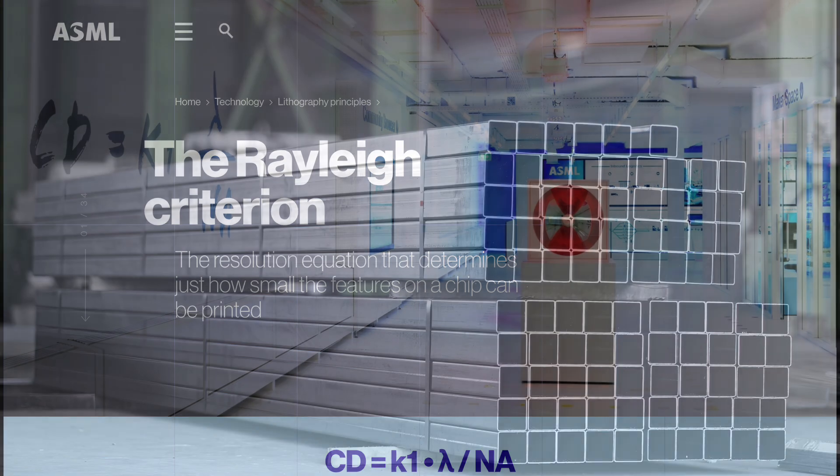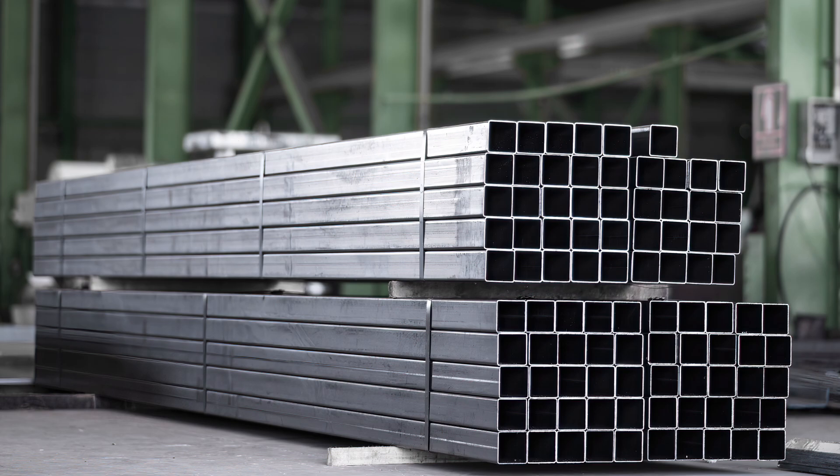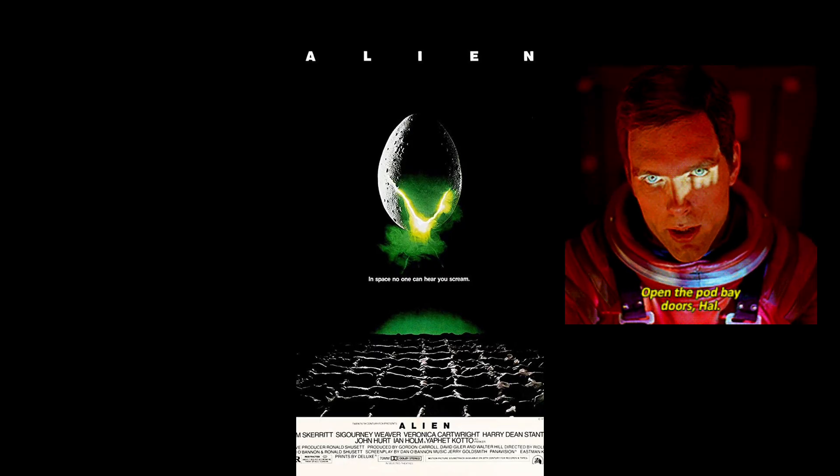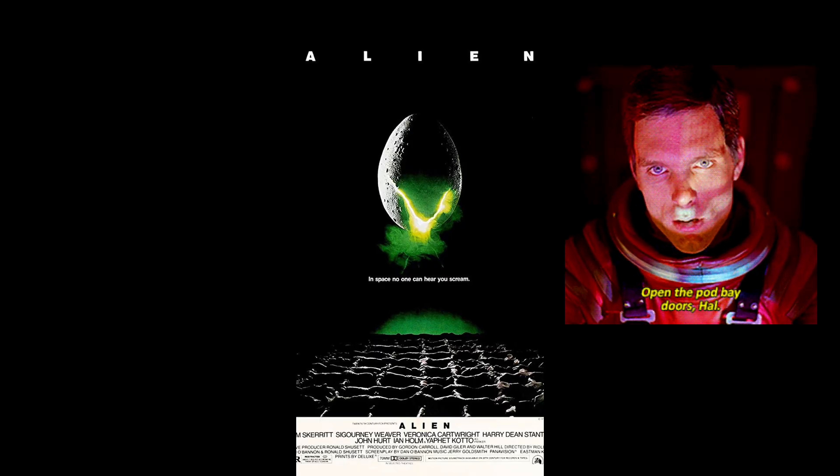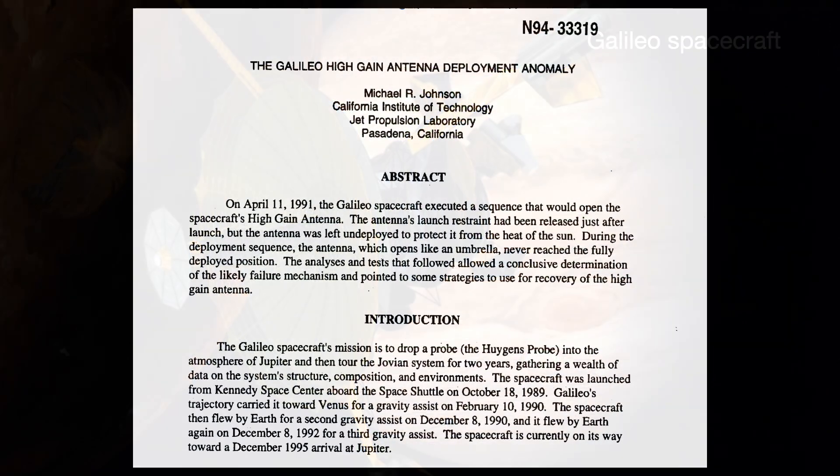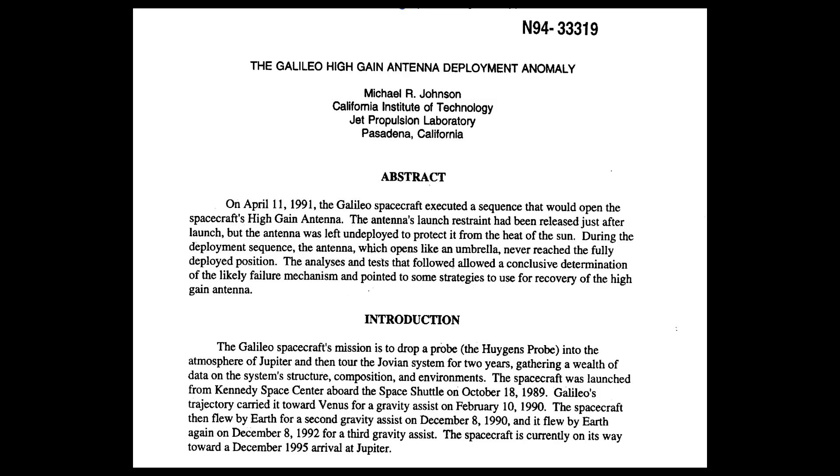Cold welding continues to be a thing today. Space engineers in particular have to worry about it because space is a vacuum where nobody can hear you scream that the pod bay doors can't open because they cold welded together. And famously, in 1991, the Galileo spacecraft is traveling to Jupiter and it failed to fully deploy its high-gain antenna because the lubricant rubbed away and the antenna's pins and socket cold welded together.